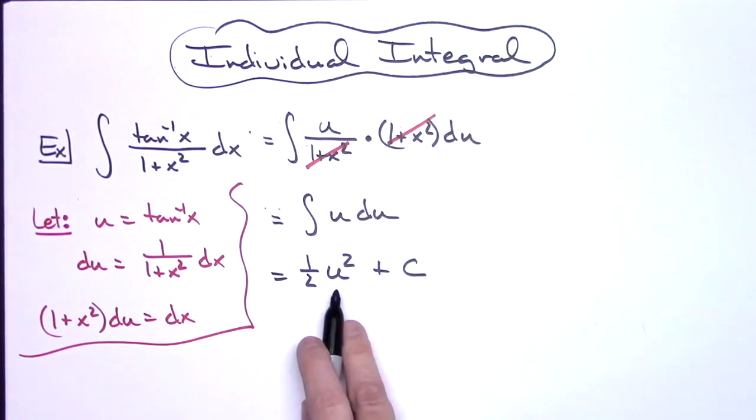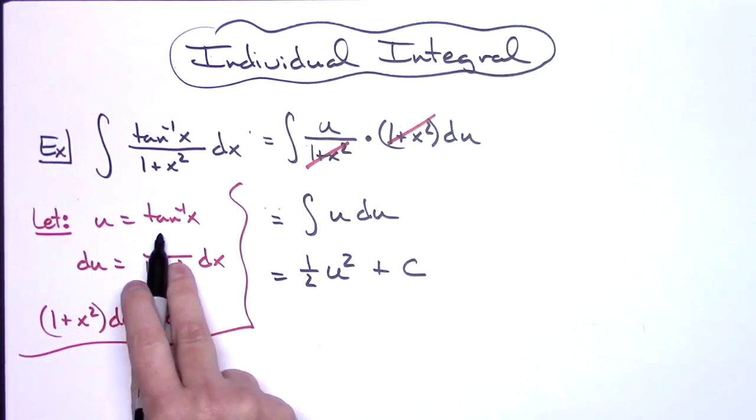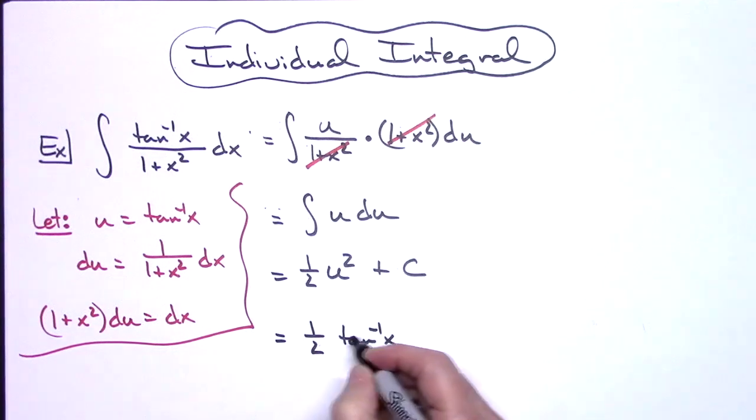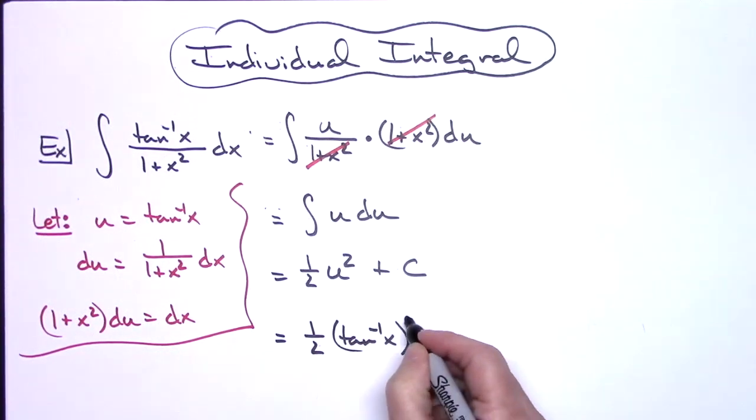Last step then would be to replace my u with what it equals there. So then I'll have 1 half inverse tangent of x to the second power plus C.